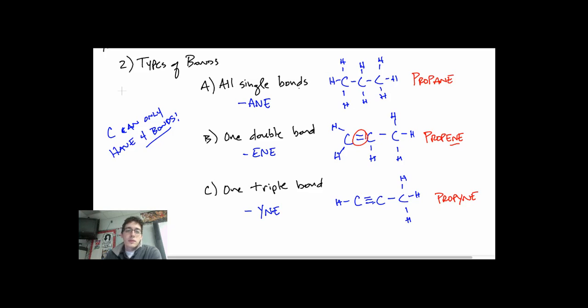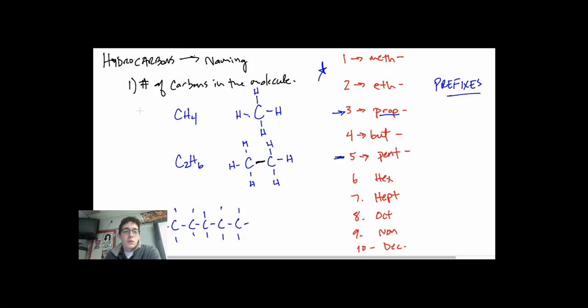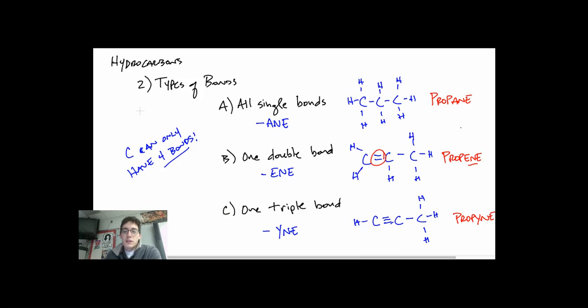So the bonding naming is pretty easy. So you need to pay attention to what kind of bonds you have. Do I have single, double, or triple? And then how many carbons do I have? Just to review, the carbons, the number of carbons, give you the prefix here. The types of bonds give you the suffix, the ANE, ENE, or YNE.